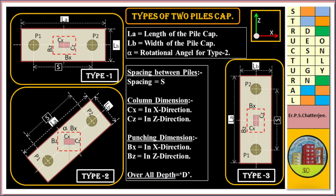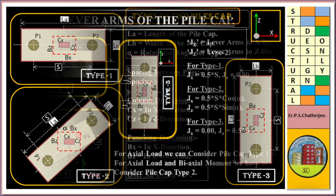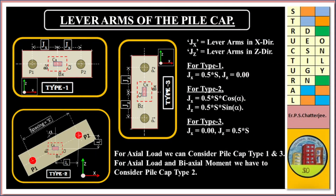Punching dimensions: BX in X direction and BZ in Z direction. Overall depth D. Lever arm of the PileCap: JX and JZ are the lever arms in X and Z directions respectively. For Type 1: JX = 0.5 × S and JZ = 0. For Type 2: JX = 0.5 × S × cos(alpha) and JZ = 0.5 × S × sin(alpha). For Type 3: JX = 0 and JZ = 0.5 × S. For axial load, consider PileCap Type 1 and 3. For axial load and biaxial moment, consider PileCap Type 2.